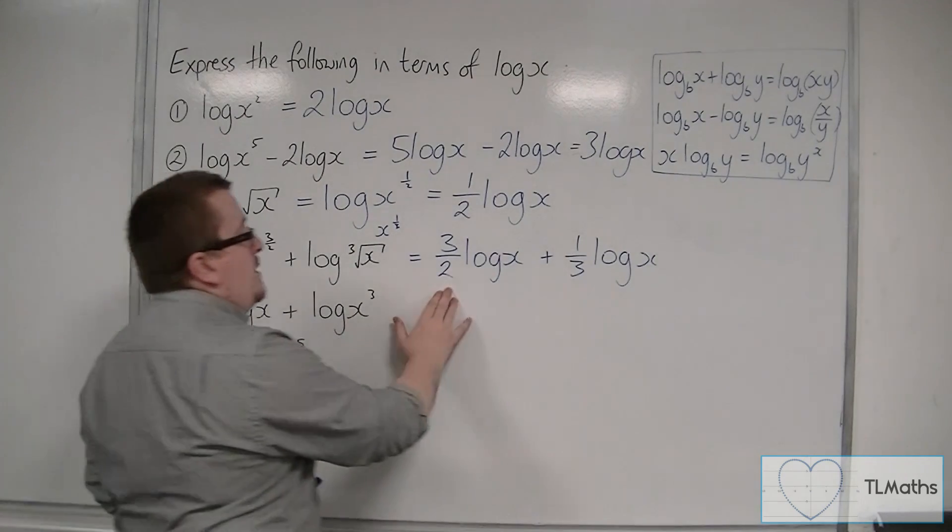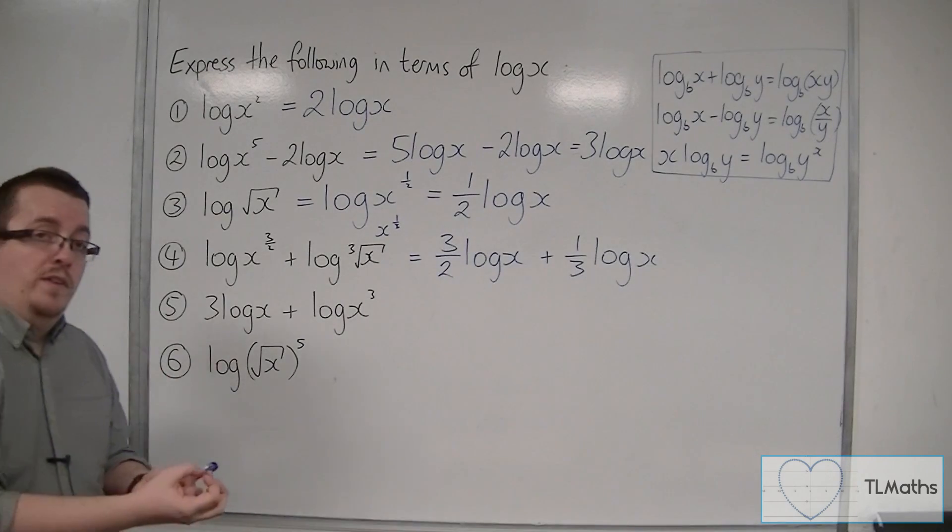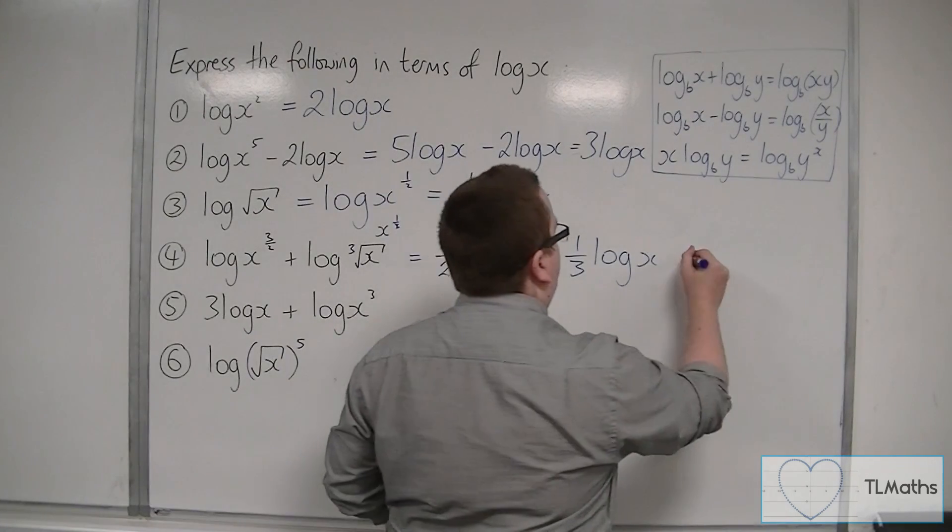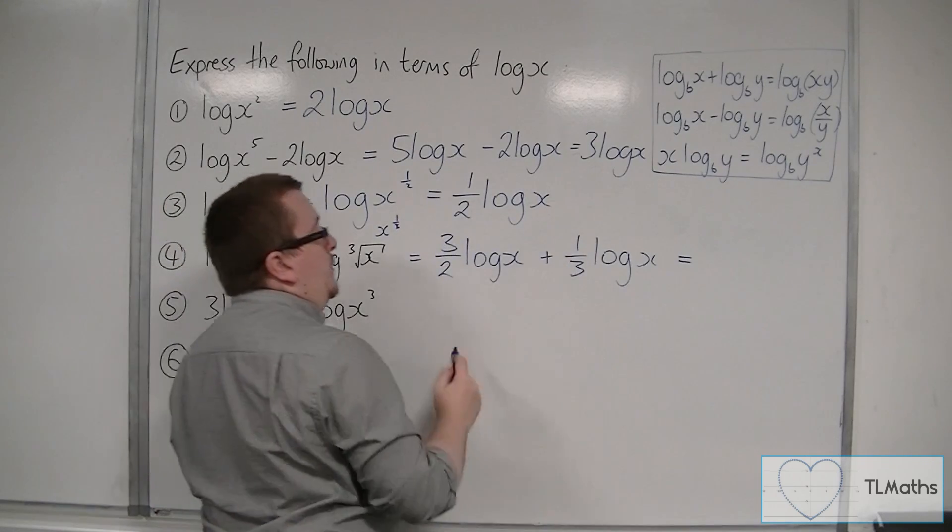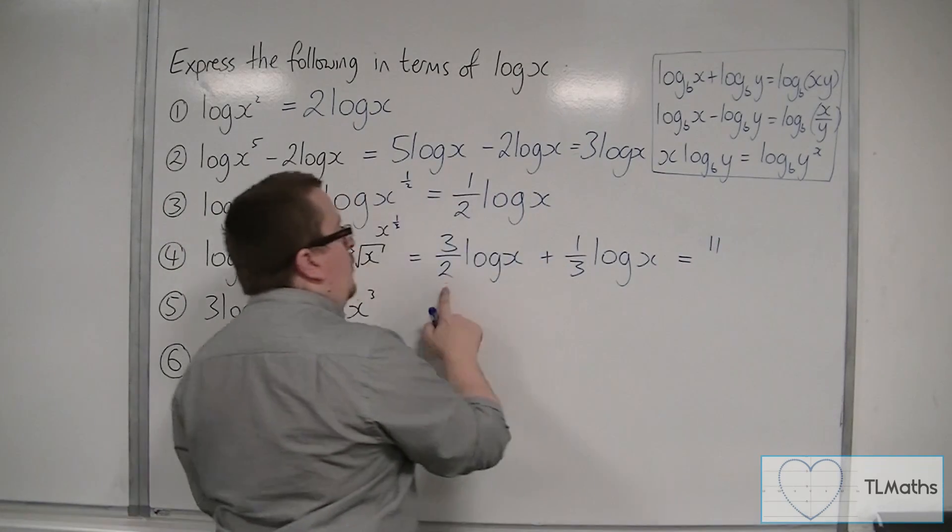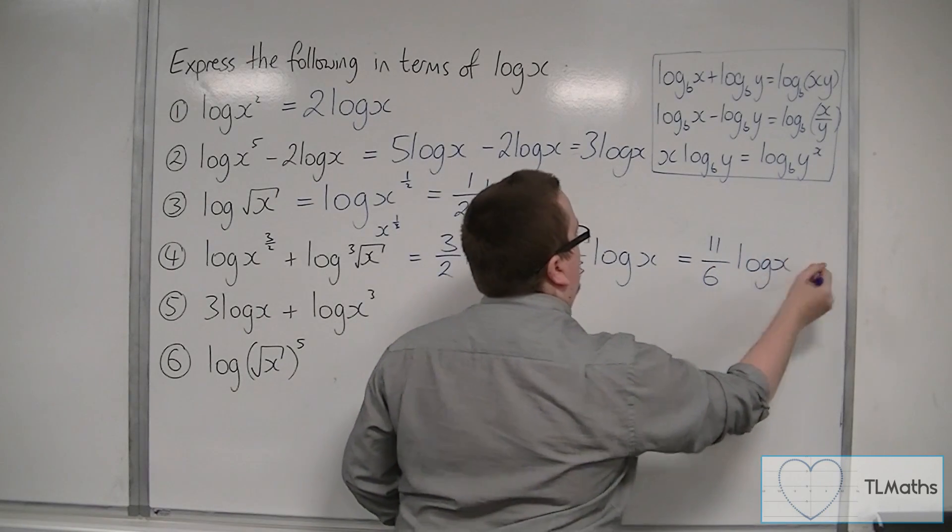Now, if I've got three halves log x plus one third log x, then I need to add the three halves and the one third together. Three times three is nine, plus two is eleven, over six, so that's eleven sixths log x.